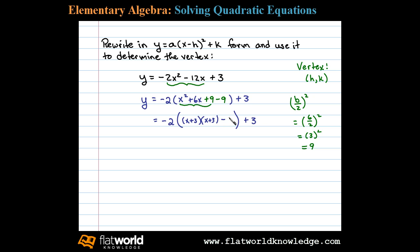In other words, we have negative 2 times x plus 3 squared minus 9 plus 3. Now at this point we apply the distributive property and multiply both of these terms by negative 2.